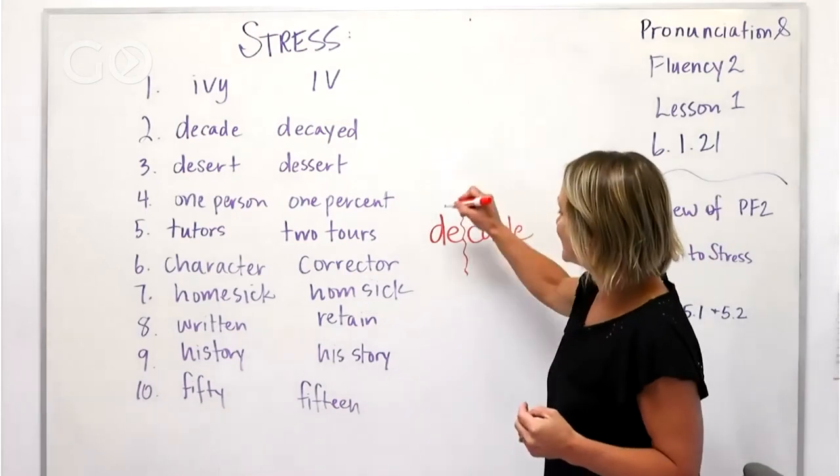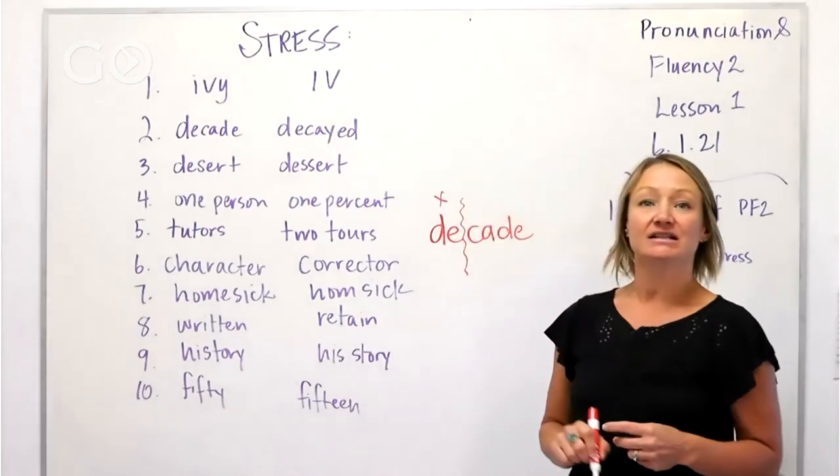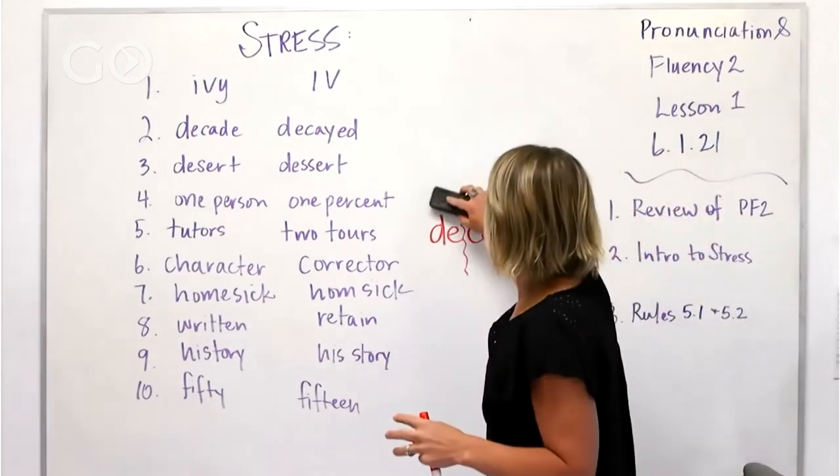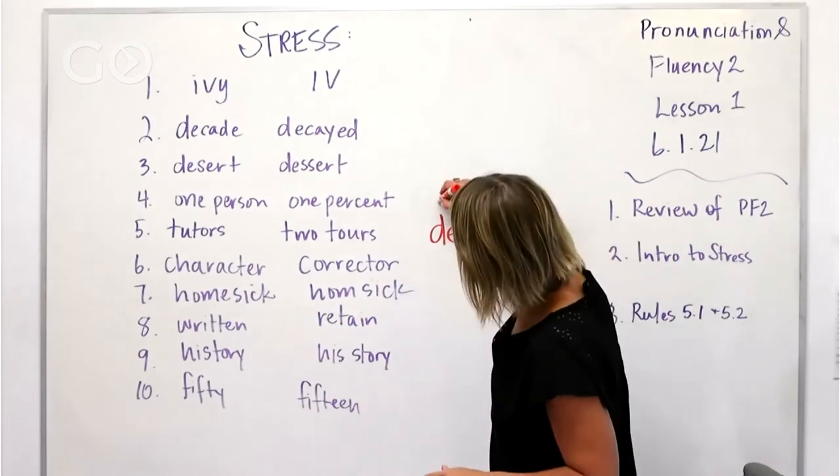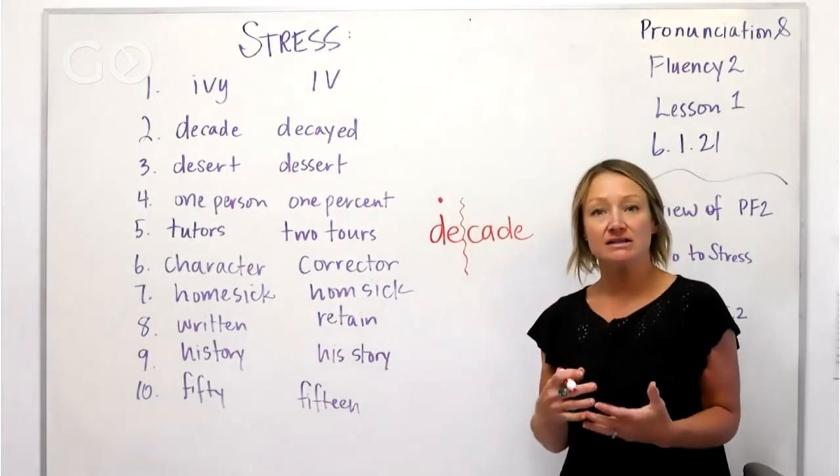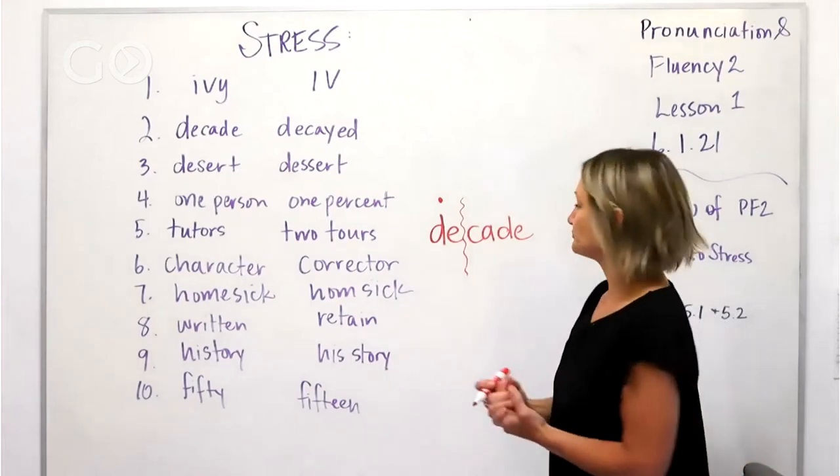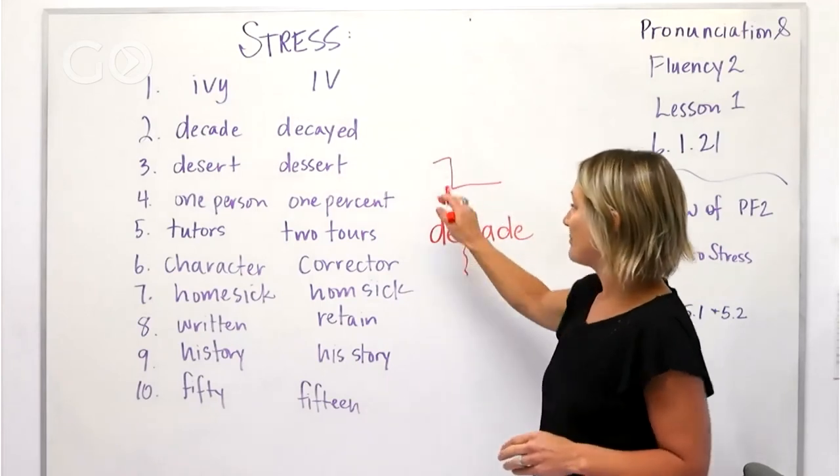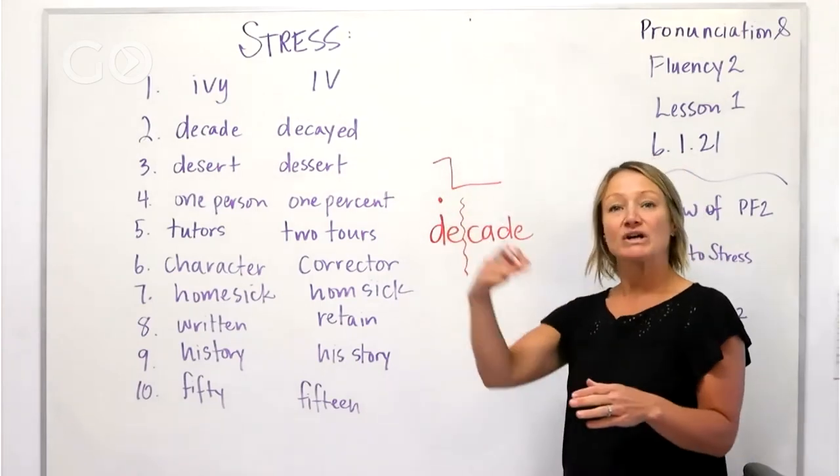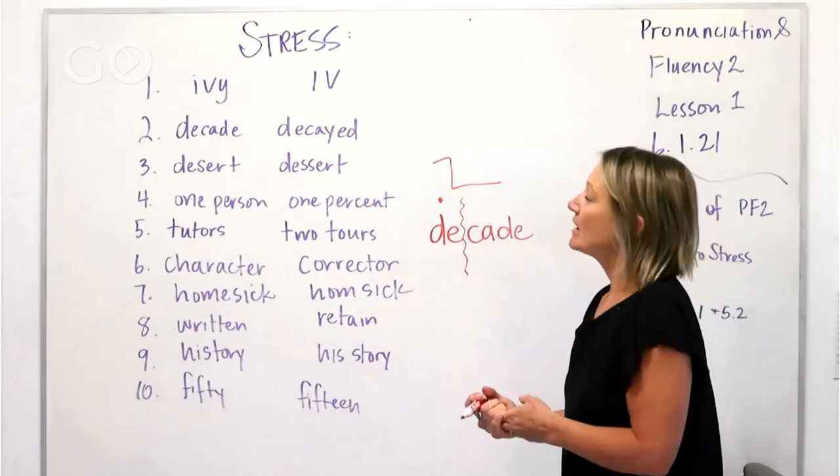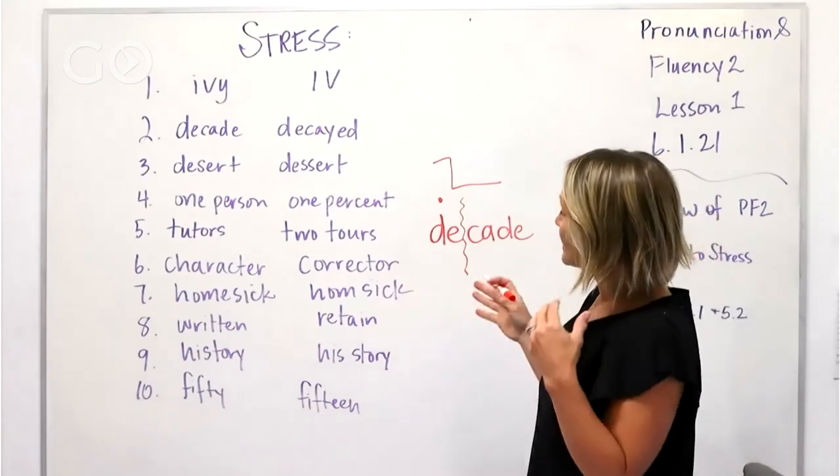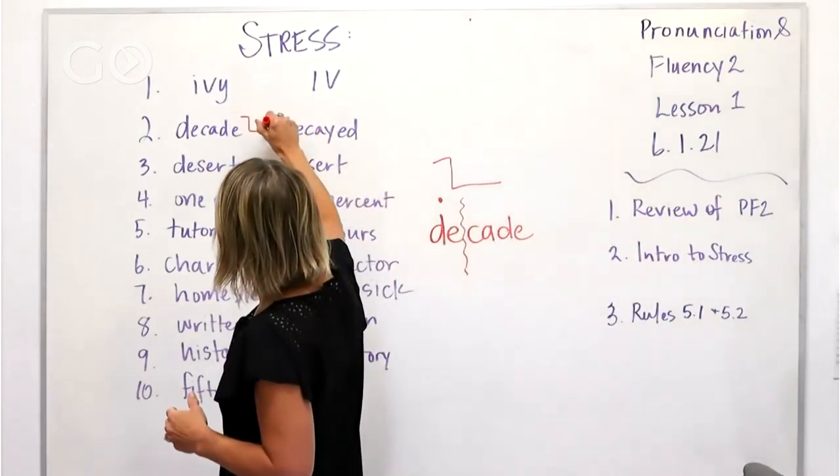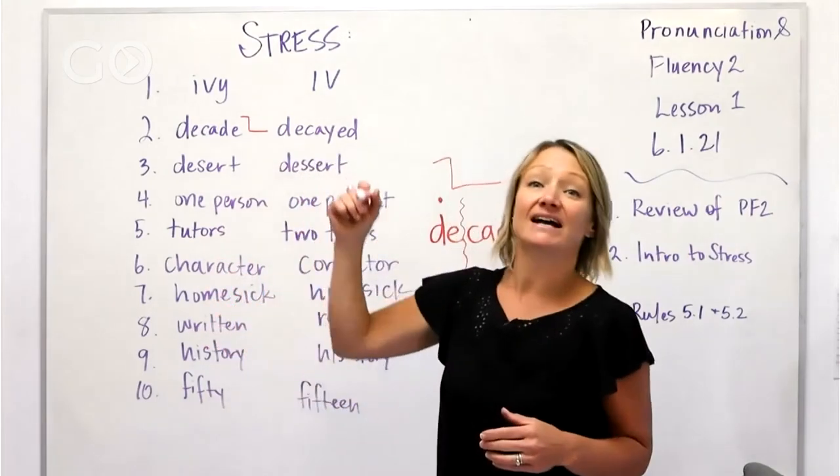And then we say decade, we're stressing this first syllable. So we can indicate that by, some people will do like a circle like this to indicate that that is the syllable that is stressed. And then some people will use like a step thing to kind of show which syllable is the stressed one. Let's use this little step like this. So it's decade, decade.